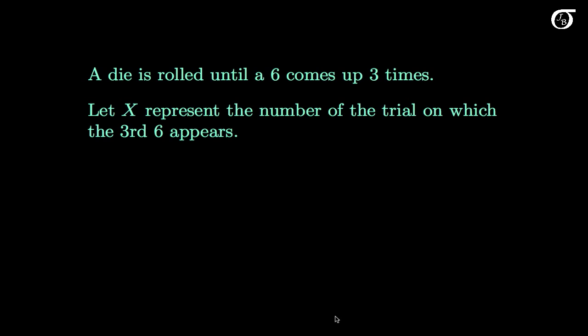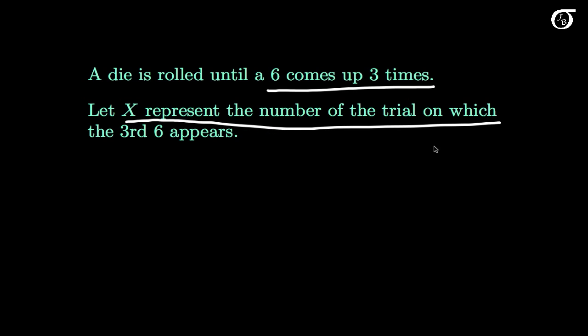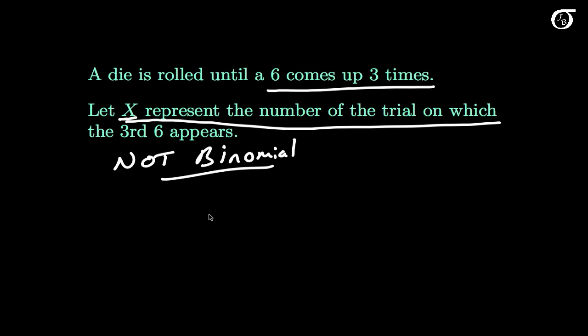A similar example: a die is rolled until a 6 comes up 3 times, and x represents the number of the trial on which the third 6 appears. We are rolling a die in a similar way, but here the number of successes is fixed — we're rolling until we get 3 sixes. The random variable is the trial number on which you get that third success, so we do not have a fixed number of trials. Therefore x is not going to have a binomial distribution. It actually has what we call the negative binomial distribution.